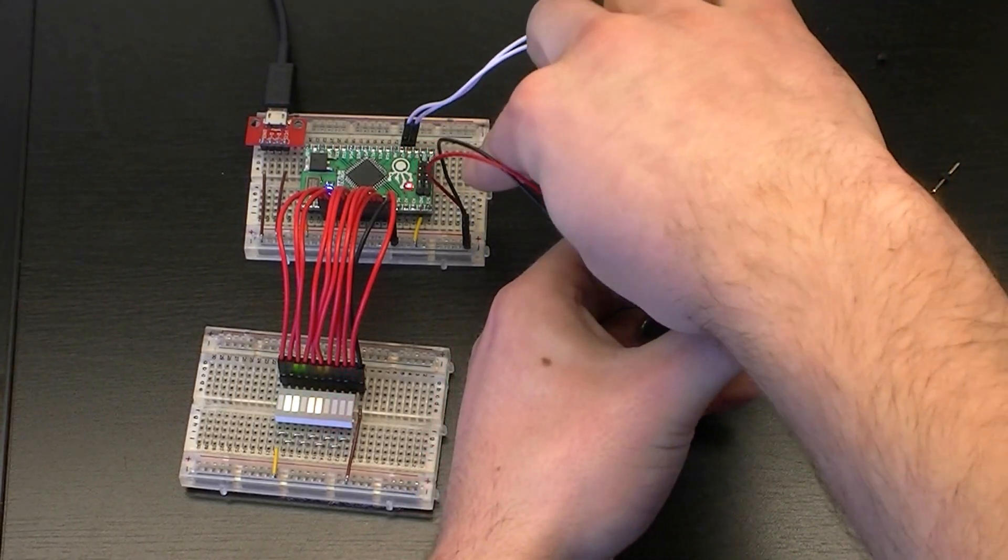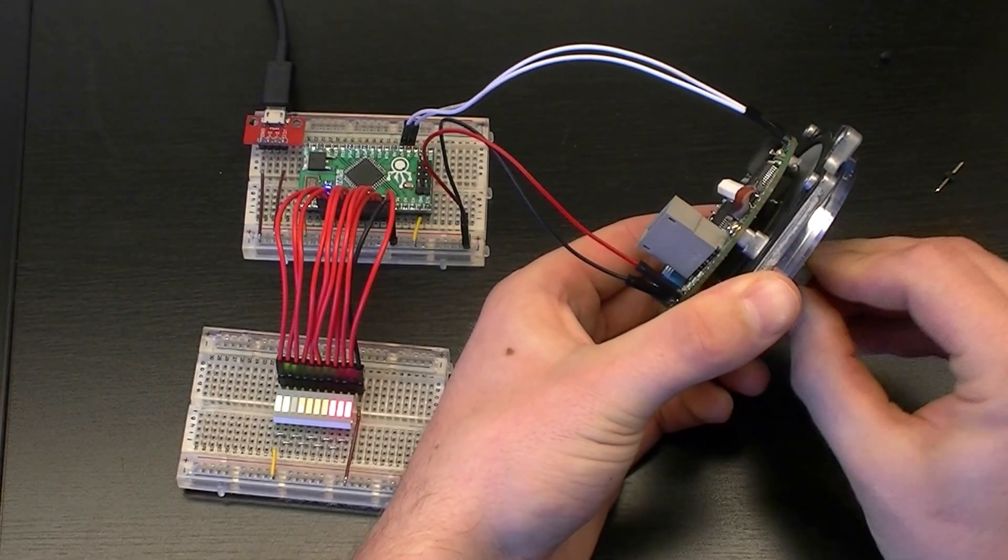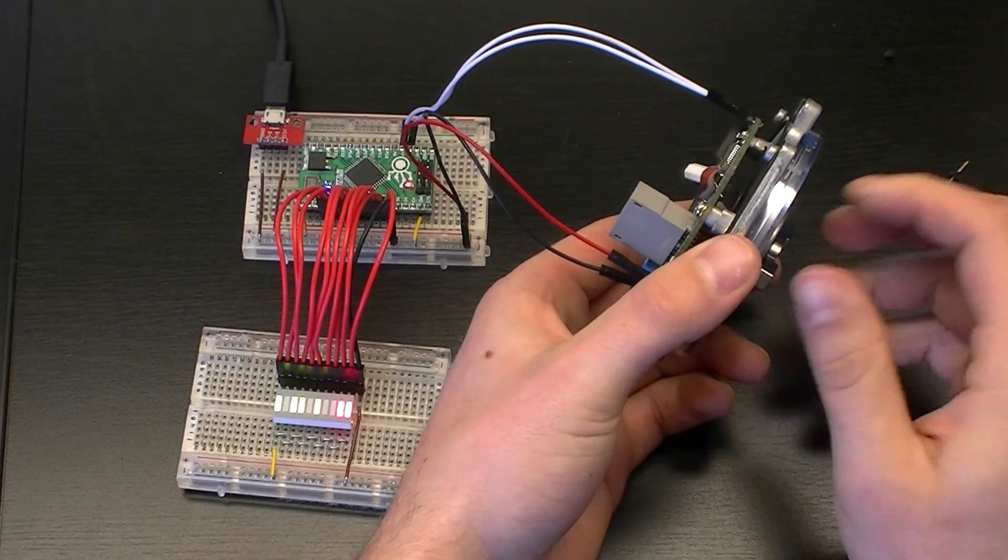If you look at this little red light here you're going to see in one direction it's on, the other direction it's off. On, off, on, off. So that lets us tell the direction that the motor is spinning.